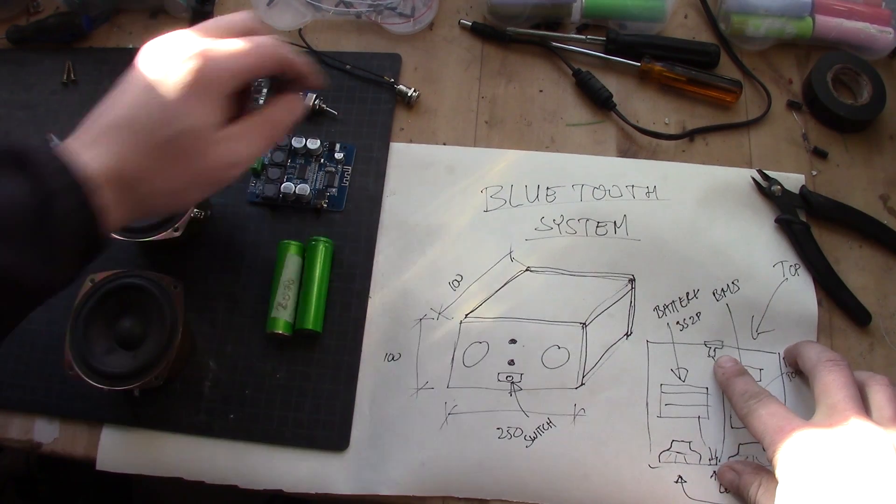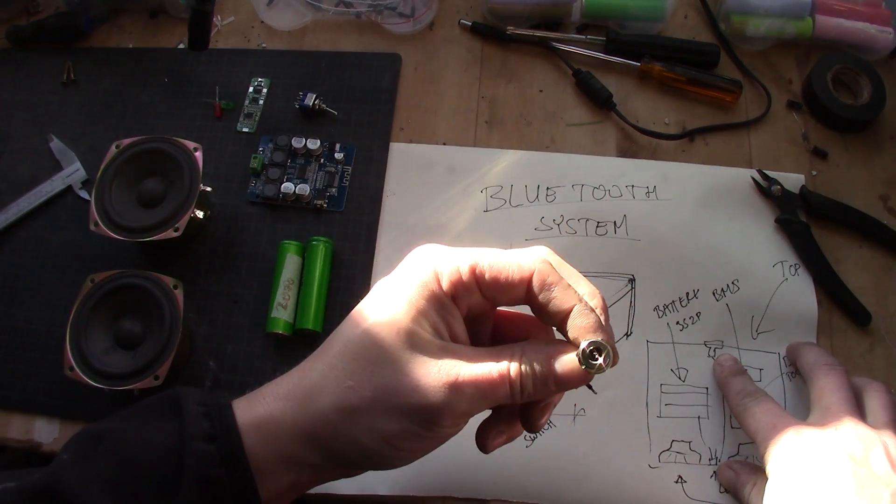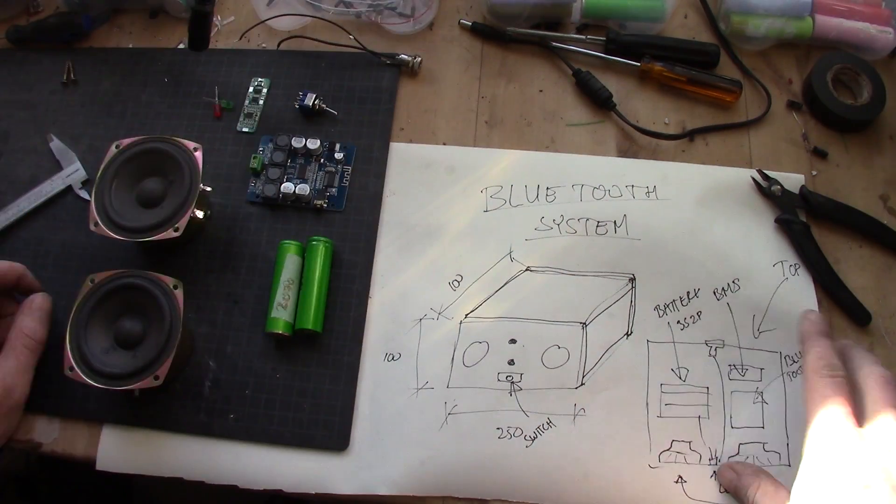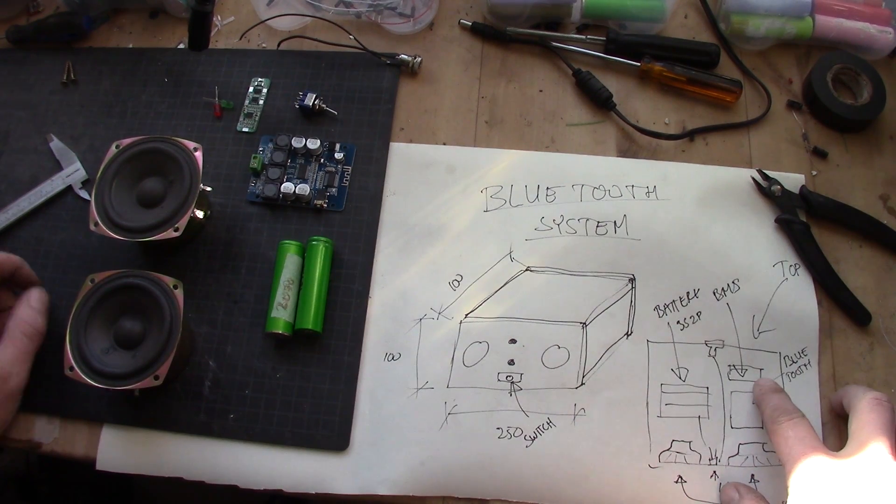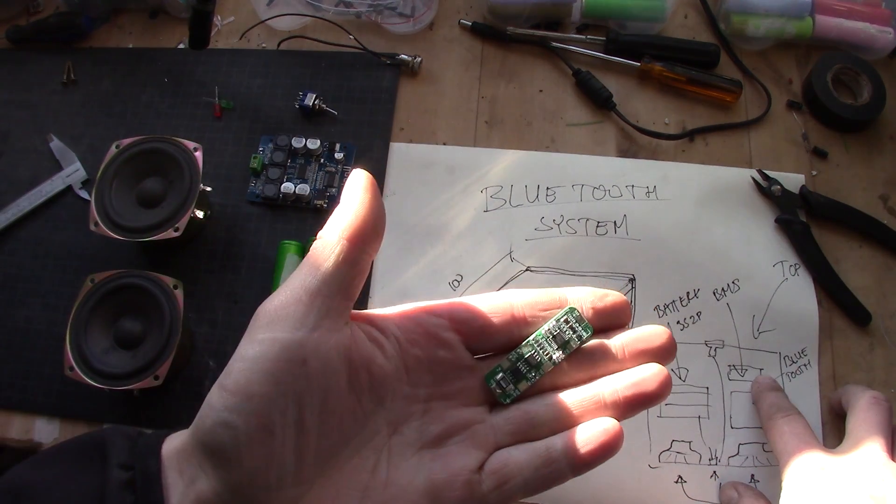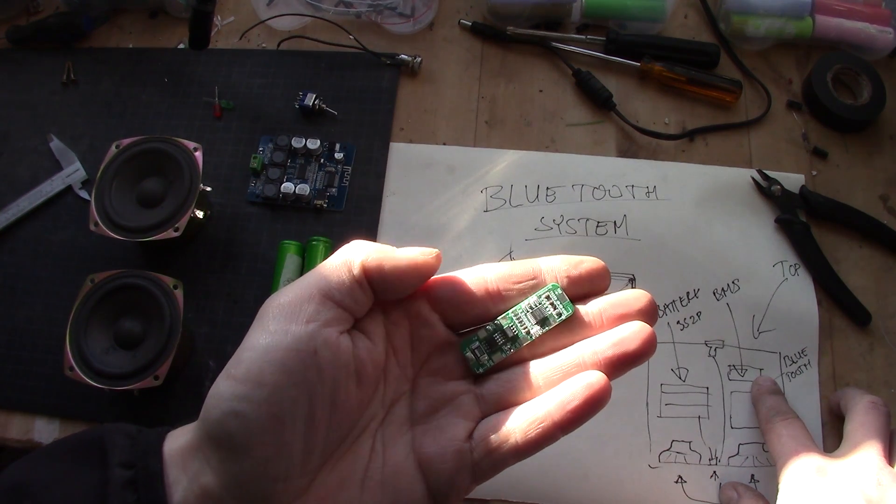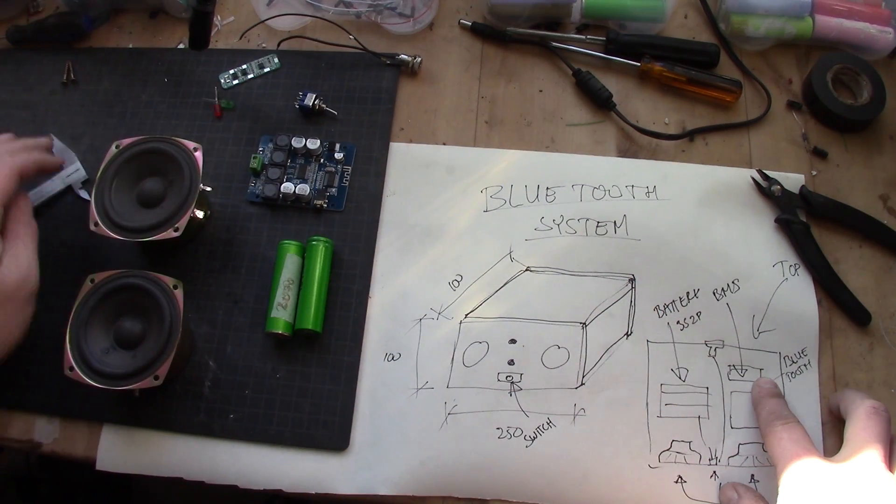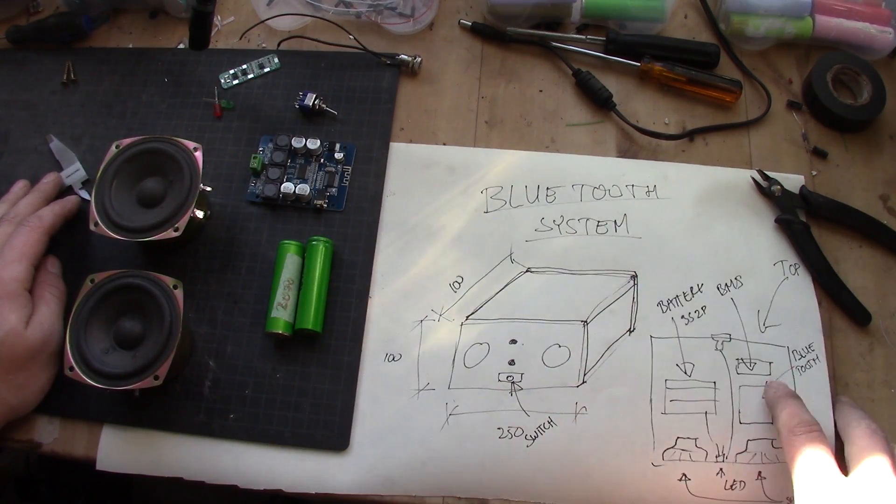In the back there will be a charging outlet so you can charge the whole thing. Inside you have the BMS system and this is the BMS that will take care of the battery. And then you have the batteries and you have the Bluetooth.